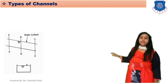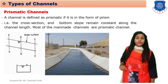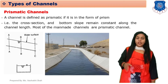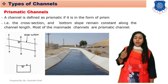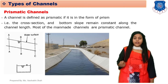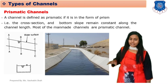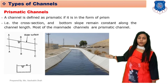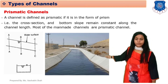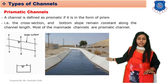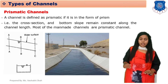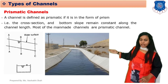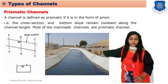Now we will discuss some types of channels. Basically, there are mainly two types: prismatic channels and non-prismatic channels. A prismatic channel is one where the flow is in a proper lined shape of a prism, as seen in this diagram. All artificial or man-made channels are prismatic channels, where the slope is properly defined and the bottom slope remains constant along the length of the channel.